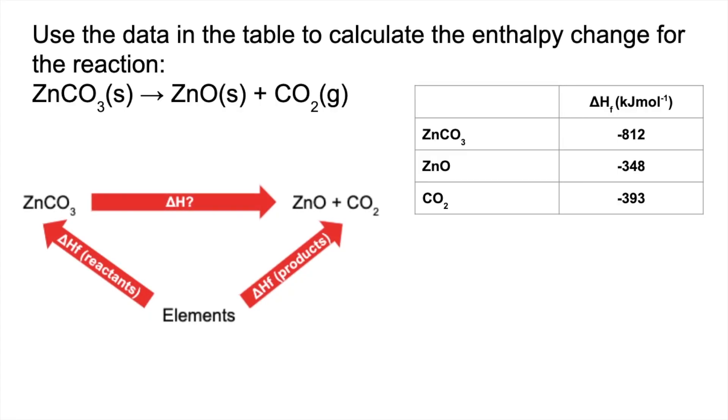So there's the cycle, that's our A to B reaction if you like. ZnCO3 going to ZnO and CO2. That's the unknown enthalpy change. Elements at the bottom. This arrow here represents the enthalpy change of formation of the reactants. Just got one in this case, one reactant. And here represents the enthalpy change of formation of the products.